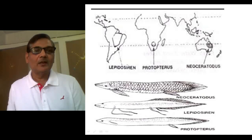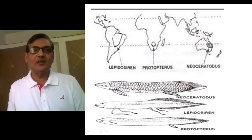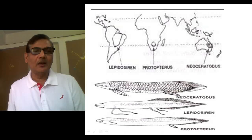Since we talk about evolutionary aspects, we can take the example of lungfishes. Presently, surviving lungfishes are represented in the form of three genera: Lepidosiren, found in South America; Protopterus, found in the freshwater rivers of Africa; and Neoceratodus, also a freshwater fish of Australia. These are continents which are distantly located, yet they share a single kind of fish — the lungfish.